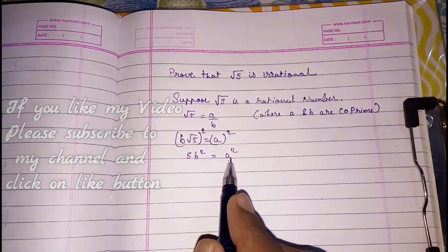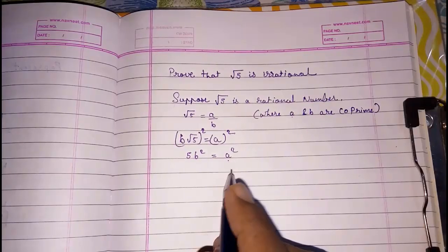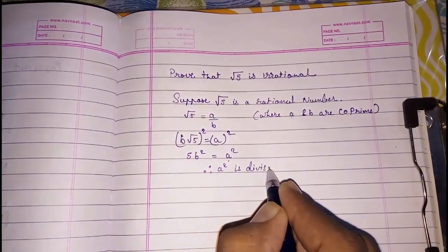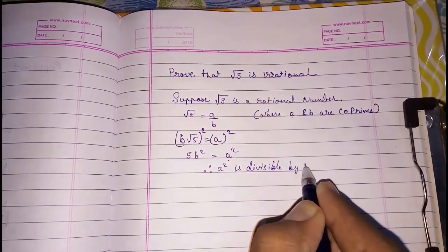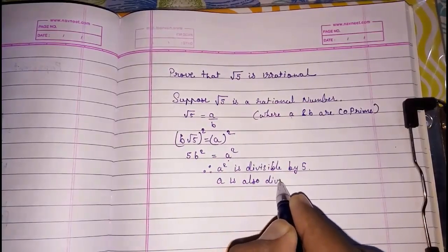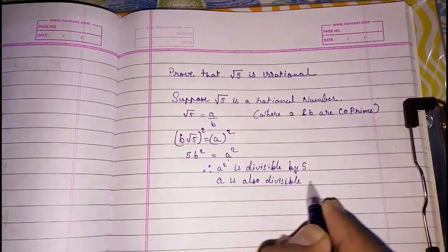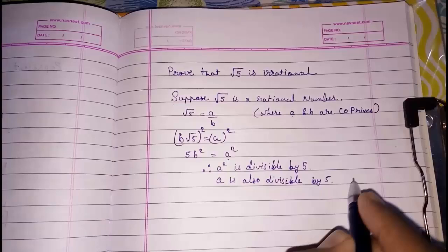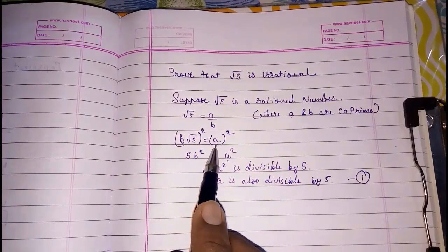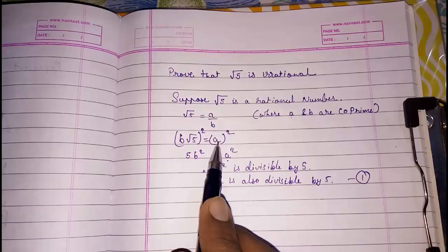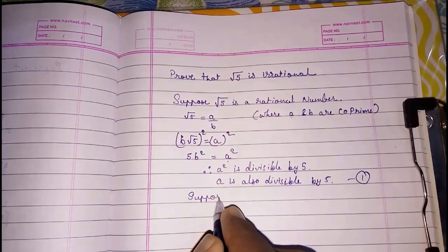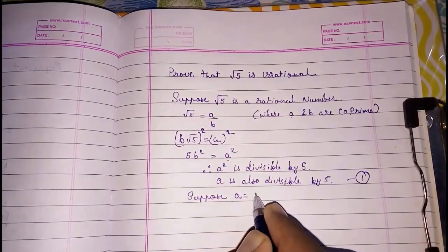Now clearly 5b squared equals a squared, and 5 is on the left-hand side. So we can say that in a squared there is also one factor of 5. Therefore a squared is divisible by 5, and so a is also divisible by 5. Take this as result number 1.